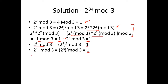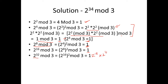Now compute 2^32 mod 3. This is (2^16)² mod 3 = (2^16 × 2^16) mod 3. Applying the multiplication property: (2^16 mod 3) × (2^16 mod 3) mod 3 = 1 × 1 mod 3 = 1 mod 3 = 1. So 2^32 mod 3 = 1.